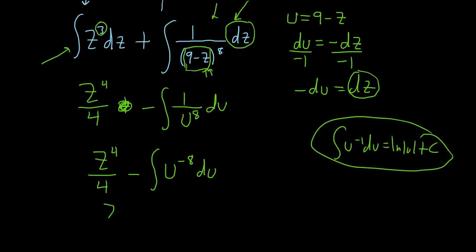So this is z to the 4 over 4 minus. And then adding 1 to negative 8 is negative 7. And then over negative 7. A common rookie mistake is people will add 1 and they'll put negative 9. That's wrong. You're adding 1 to negative 8 so that gives you negative 7.